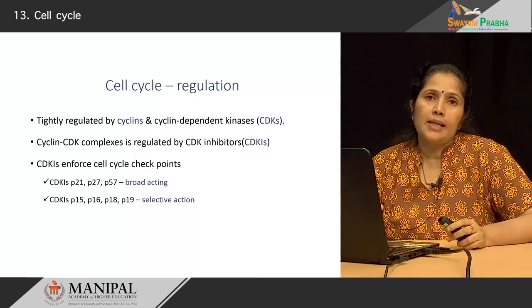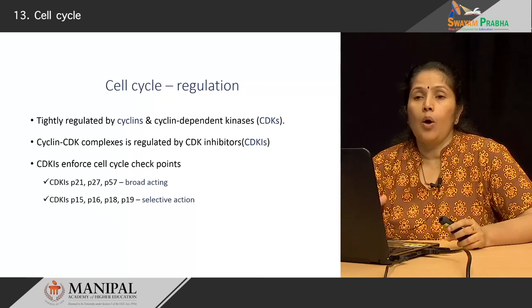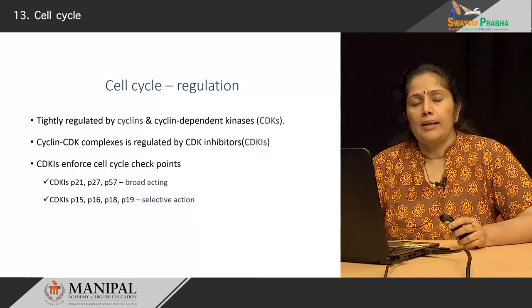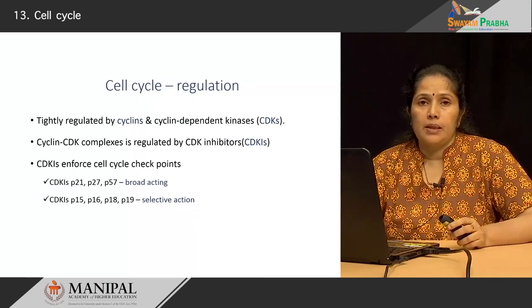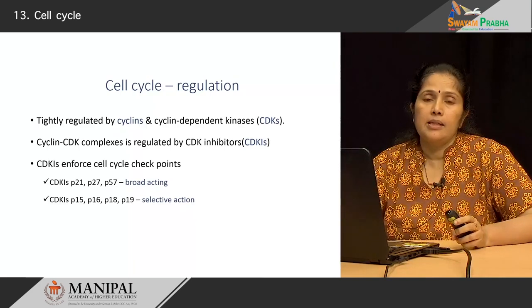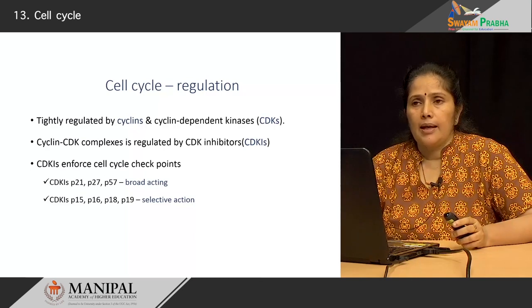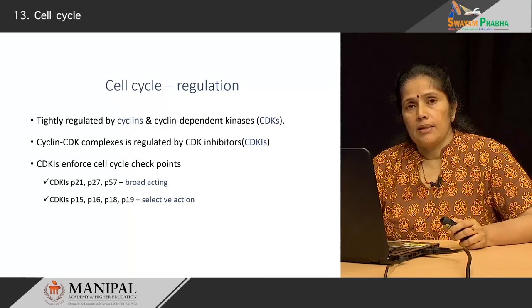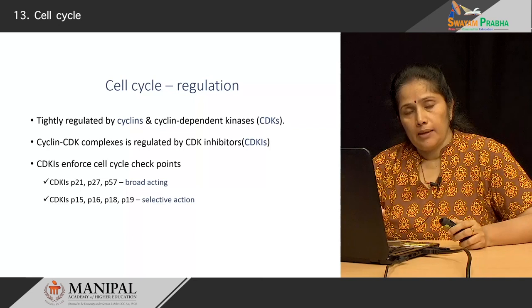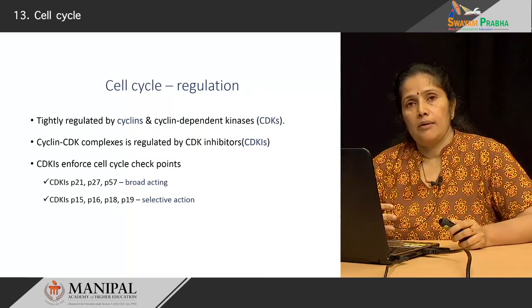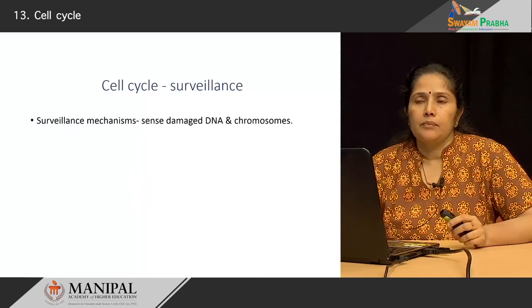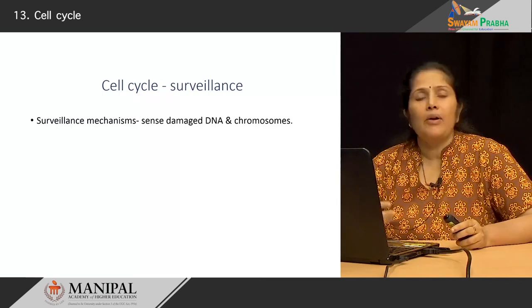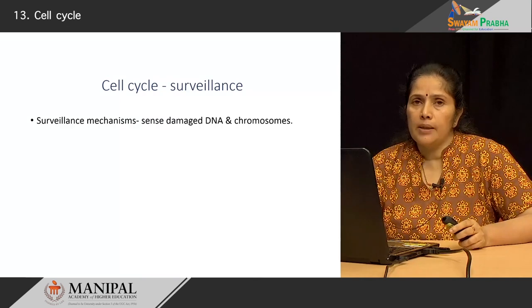There are two types of CDKIs. The broad-acting CDKIs are P21, P27, and P57, while the others with a much more selective mode of action are P15, P16, P18, and P19. These two types of CDKIs play their role in the checkpoints of the cell cycle, checking whether the replicating cells have appropriate DNA with no DNA damage and that cell organelles have been created correctly. This is also known as surveillance of the cell cycle, and its function is to sense any damage occurring to the DNA or chromosome.